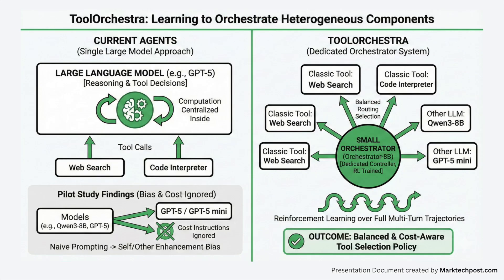Most current agents still rely on a single large model such as GPT-5, which both reasons about the task and decides when to call tools like web search or a code interpreter, so most of the computation stays inside one model. Tool Orchestra changes this by training a dedicated controller, Orchestrator 8B, that treats both classic tools and other LLMs as callable components.